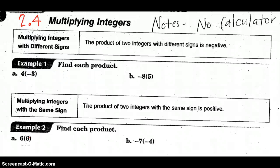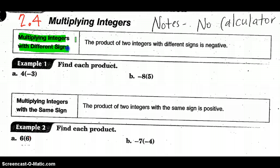Hello, Pre-Algebra students. We're in Section 4 of Chapter 2, where we're going to multiply integers. There are just a couple of things we need to pay attention to when we're multiplying integers: do they have different signs, or are we multiplying integers with the same sign?